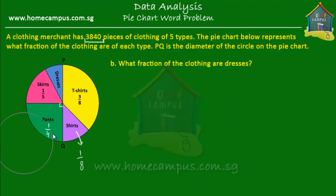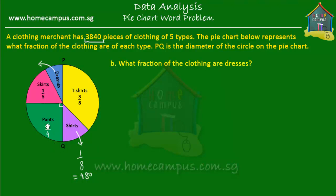The next question is: what fraction of the clothing are dresses? The dresses are here. Again, PQ the diameter divides the pie into two halves. So dresses plus skirts plus pants equals one half of the pie.